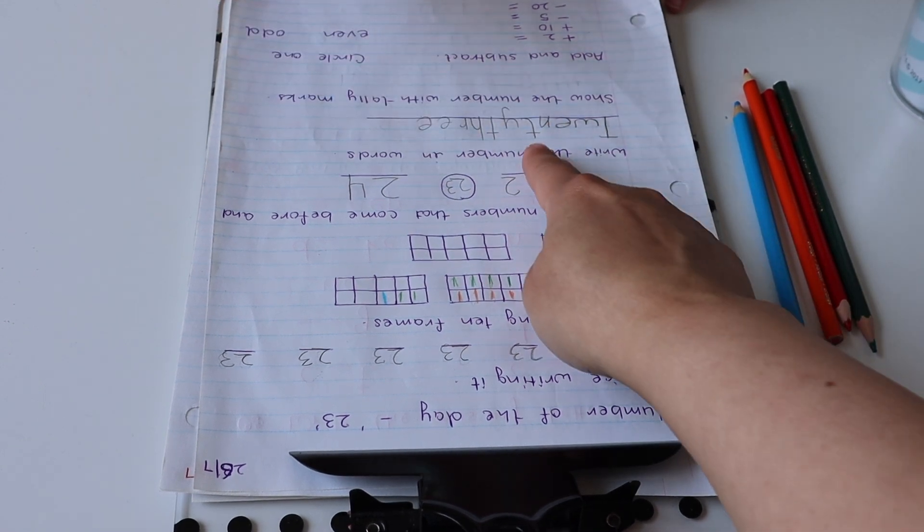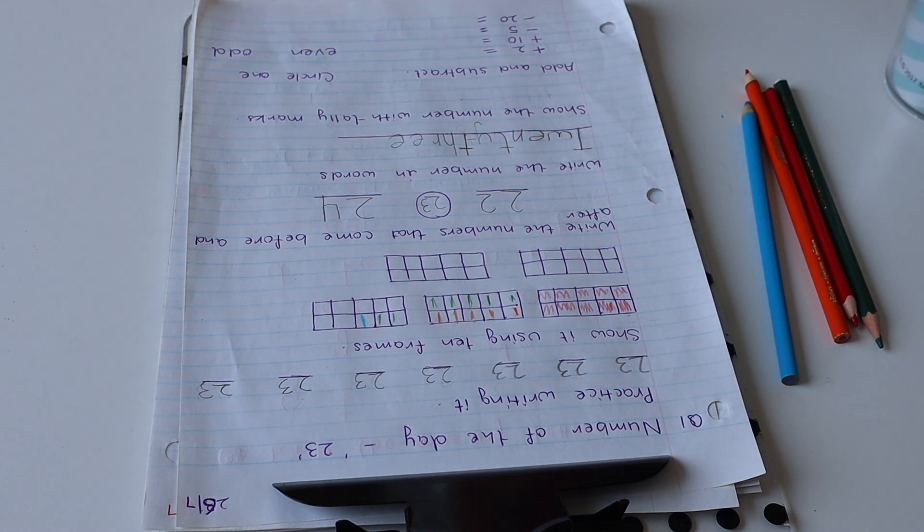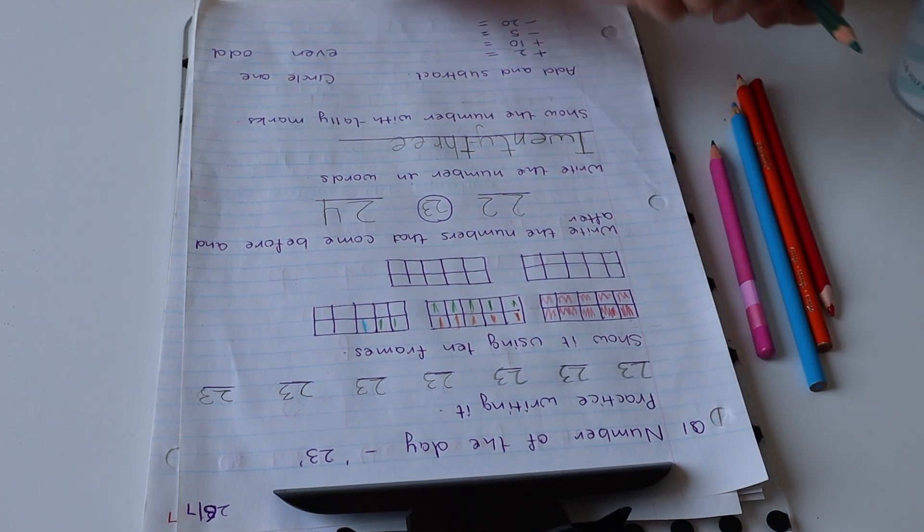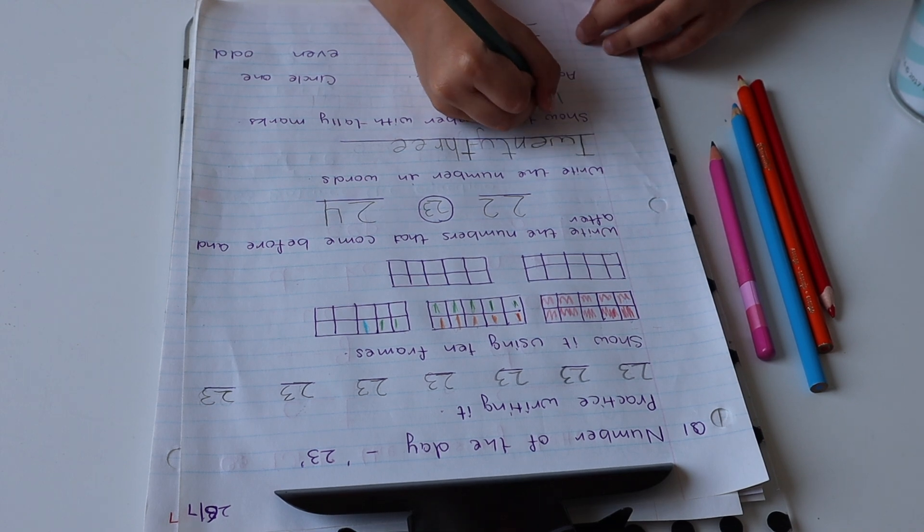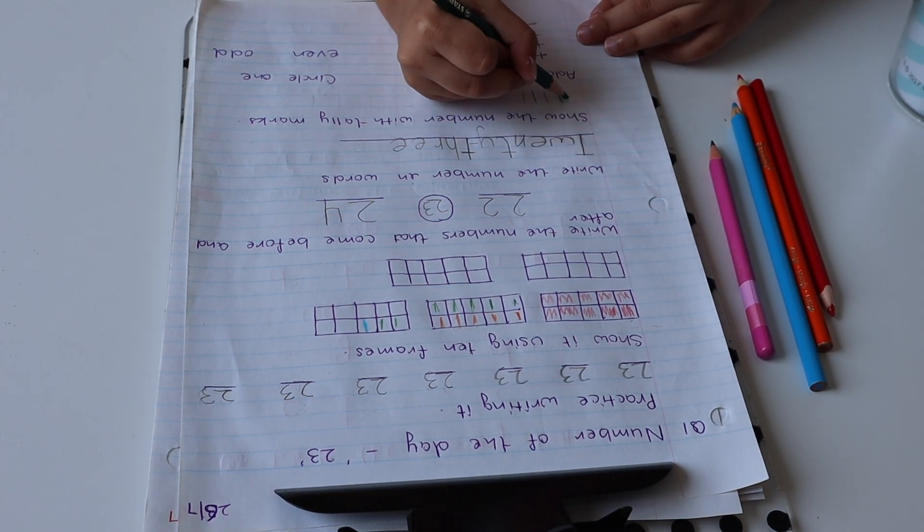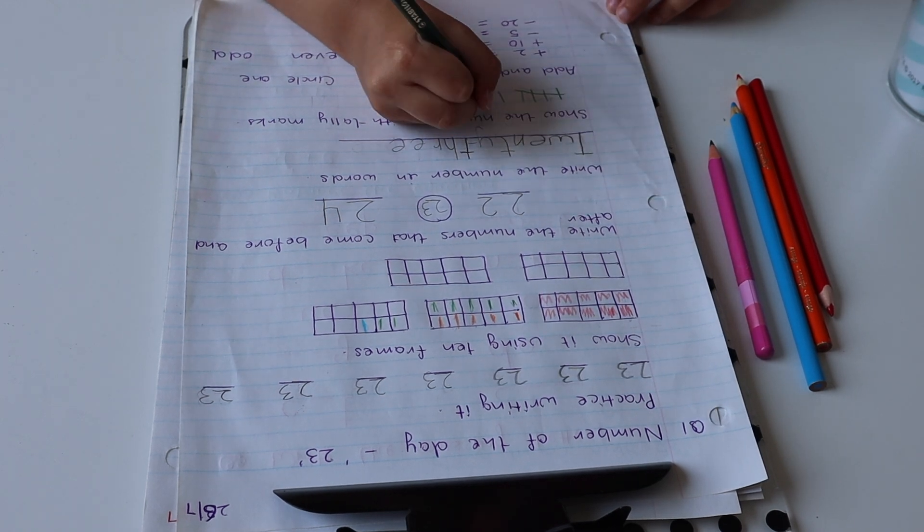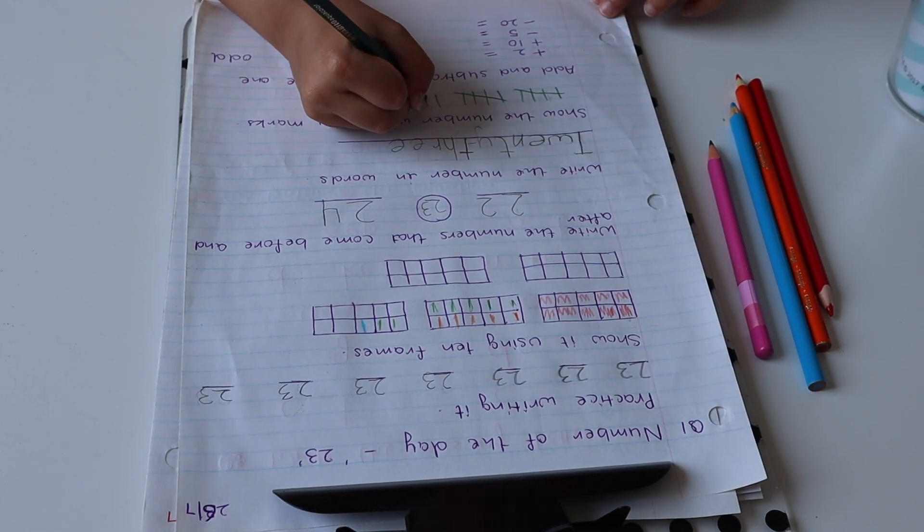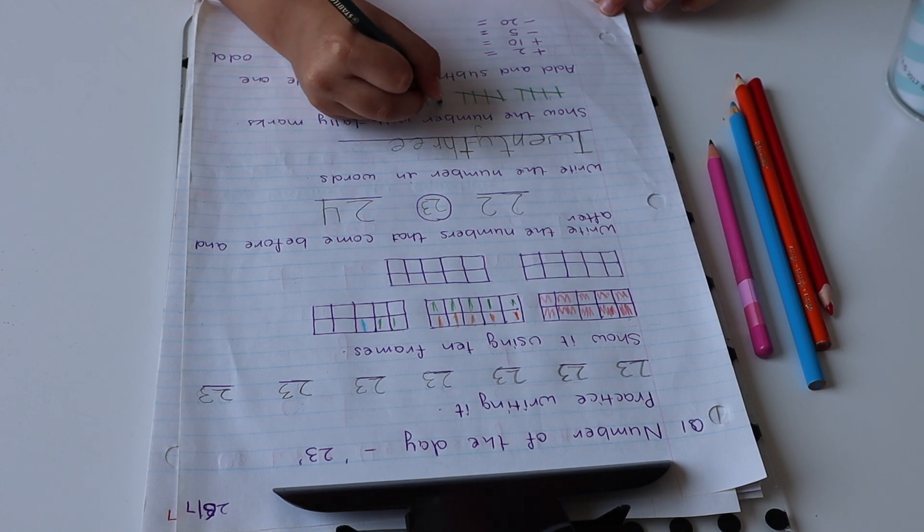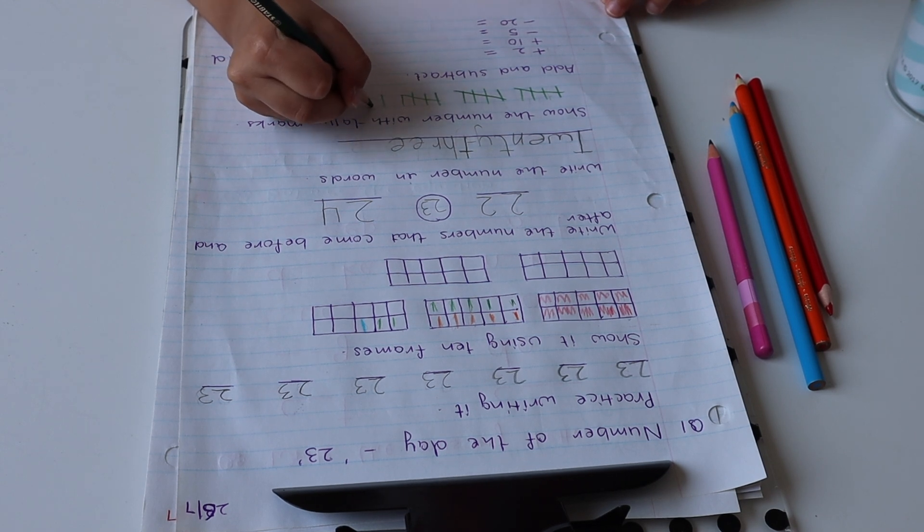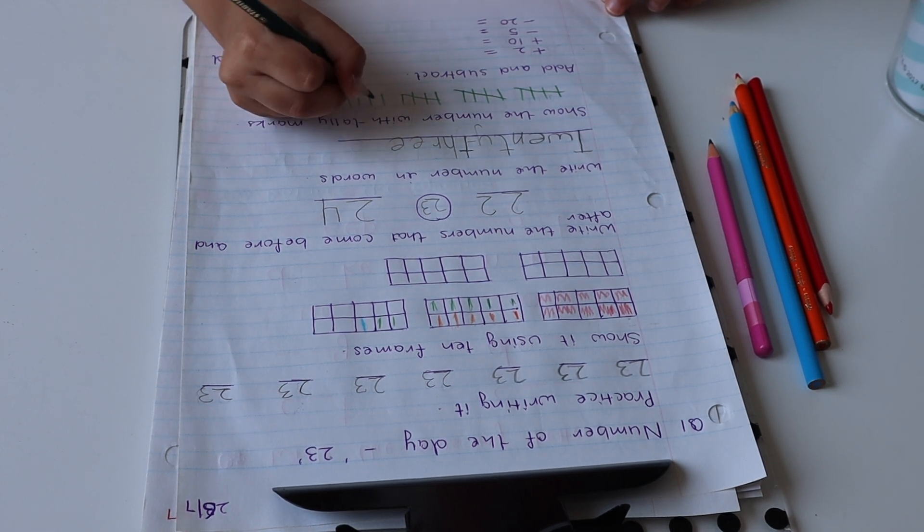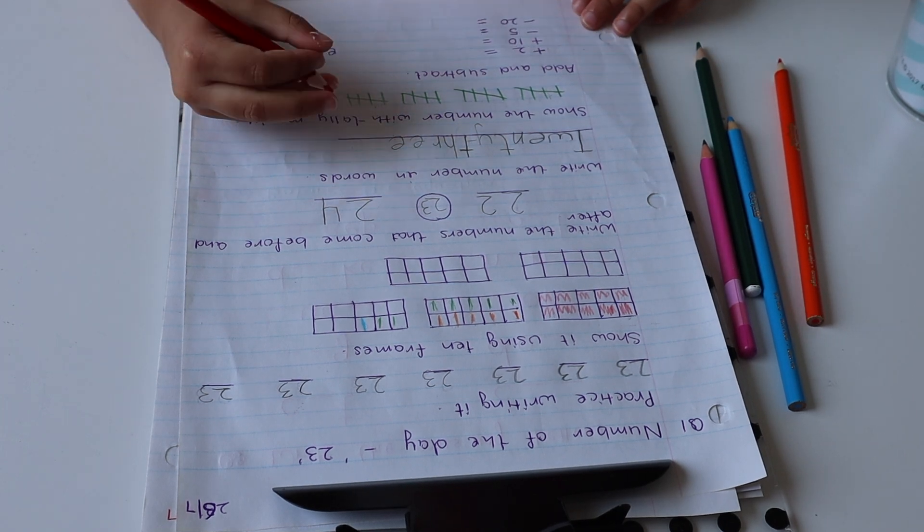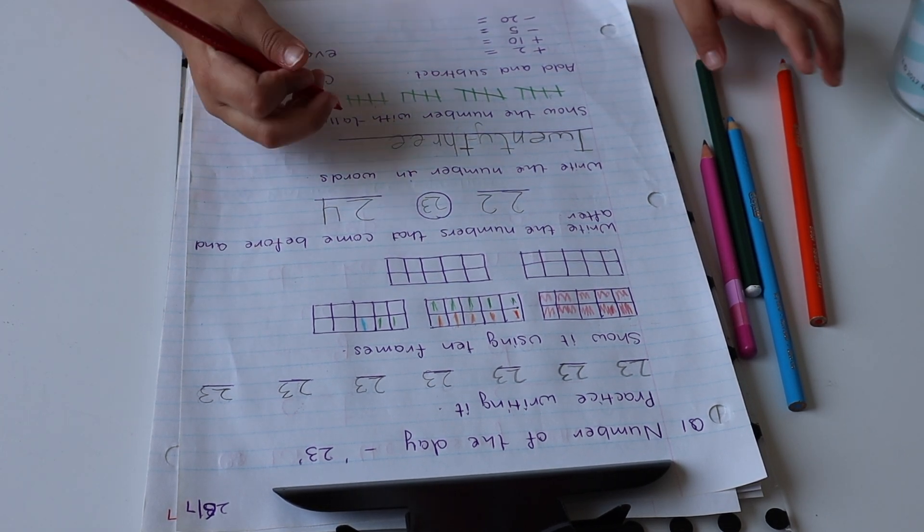You have to put a hyphen here between 20 and 3. So next, show the number with tally marks. I'm gonna do it with pencil. 1, 2, 3, 4, 5, 6, 7, 8, 9, 10, 11, 12, 13, 14, 15, 16, 17, 18, 19, 20, 21. You can use the same color.